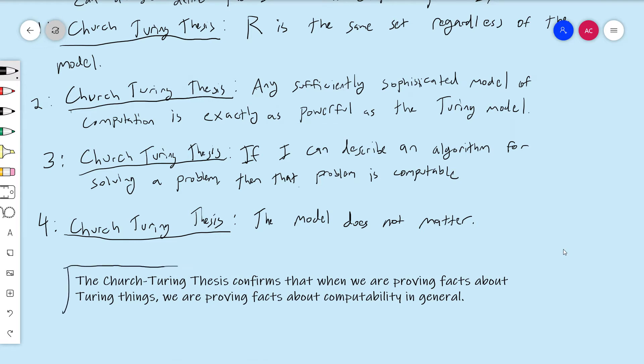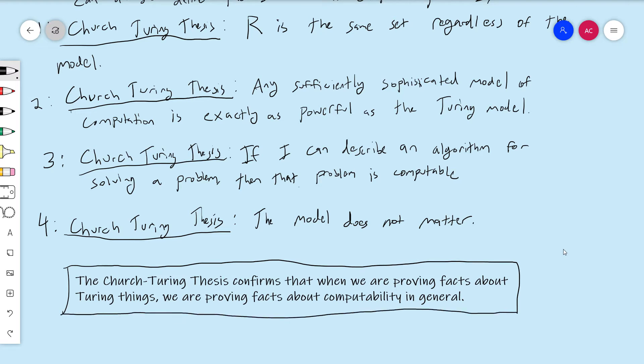All of these are going to be important to note. I can invoke the Church-Turing thesis by describing a mechanical algorithm for solving a problem without actually giving you a Turing machine for it. That's the thing that people who are real sticklers for mathematical rigor dislike. We'll use that as little as possible, but it's almost impossible to completely avoid using the Church-Turing thesis in that regard. Beyond that, it confirms that what we're going to be doing in the future relates to far more than just Turing machines.